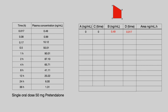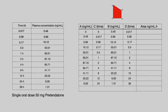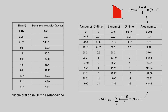The first trapezoid has coordinates A and C representing zero drug concentration at time zero. Coordinates B and D are taken from the first time point of our Pretendalone data. For the next trapezoid, B and D become A and C, and new B and D are from the next time point. Filling in all values and using the trapezoidal equation, then summing all trapezoid areas gives an AUC of 824.33 nanograms per ml times hours.